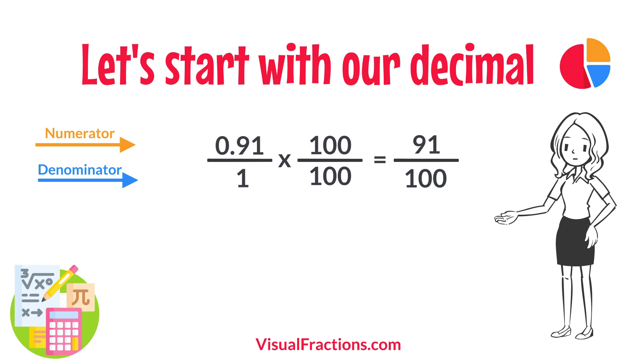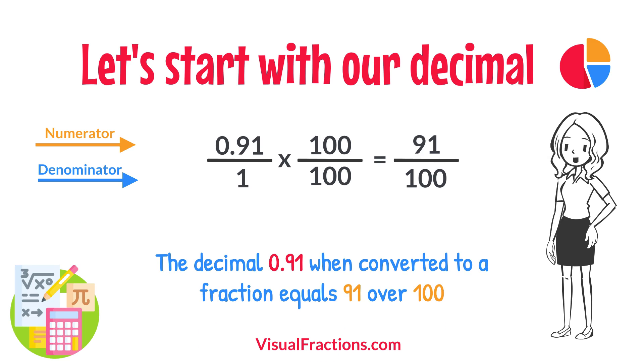And there you have it. The decimal 0.91 when converted to a fraction equals 91 one-hundredths. This fraction is in its simplest form and cannot be further simplified.